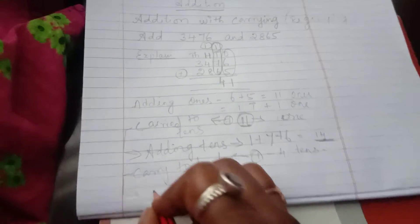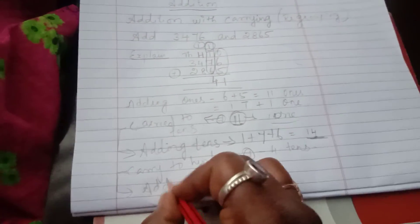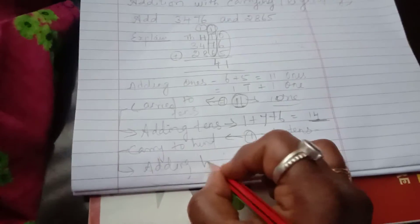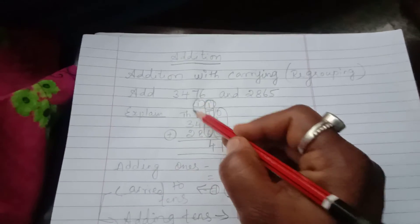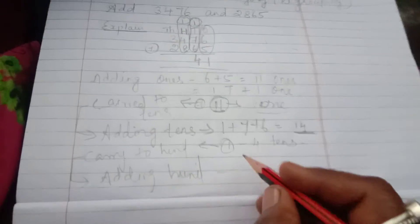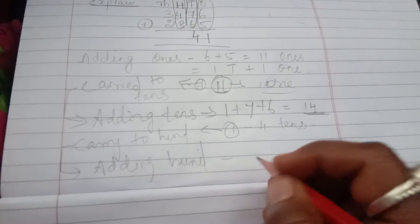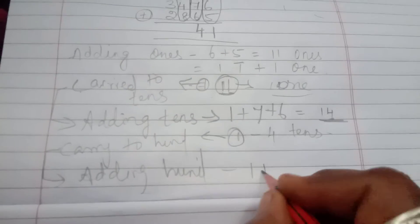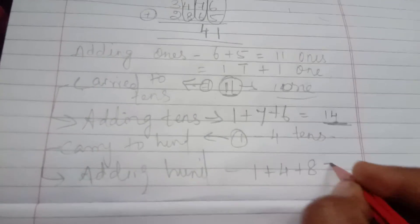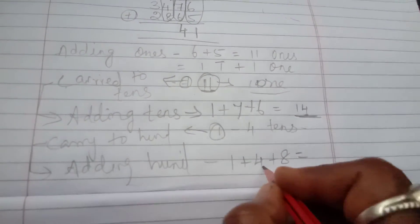This again, adding hundreds. Adding hundreds place. So we are going to add hundreds place number. See adding hundreds place, how many numbers are there? 1 plus 4 plus 8. 1 plus 4 is 5, 5 plus 8 is 13.